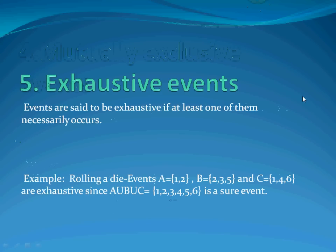Then is the exhaustive event. Events are said to be exhaustive if at least one of them necessarily occurs. For example, rolling a die: events A = {1, 2}, B = {2, 3, 5}, and C = {1, 4, 6} are exhaustive, since the union of these three events gives {1, 2, 3, 4, 5, 6}, which is the sample space — also called the sure event.